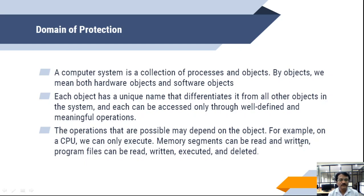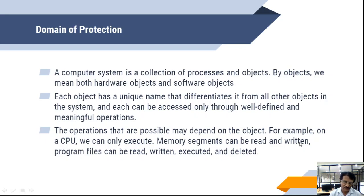A computer is a collection of processes and objects. When I say object, it is both hardware objects as well as software objects, because processes use both hardware and software to continue their execution or performance. Each object has a unique name that differentiates it from all other objects in the system, whether it is hardware or software.